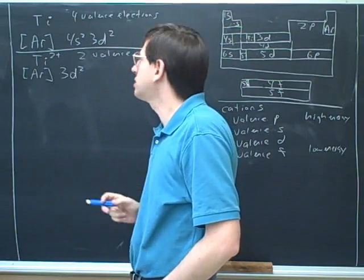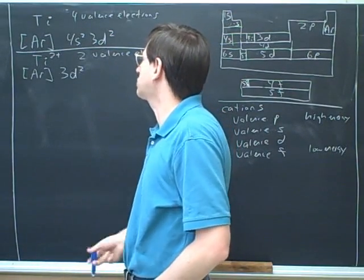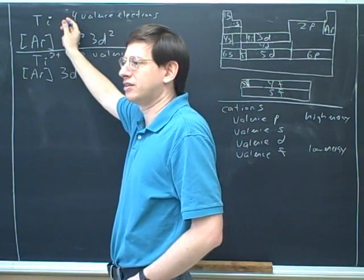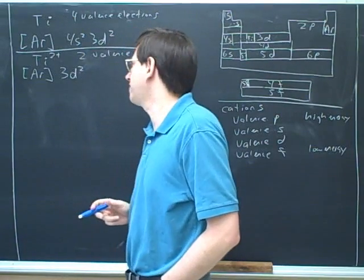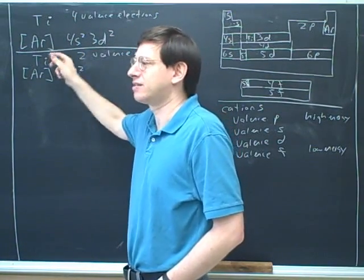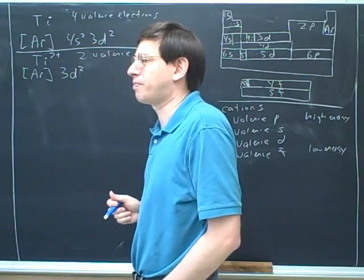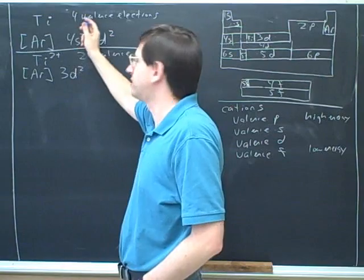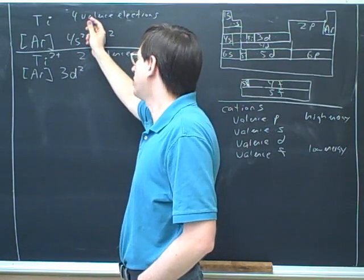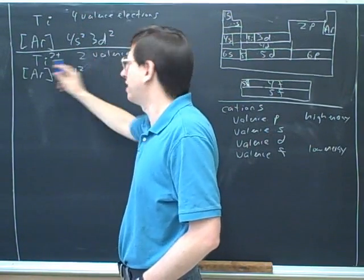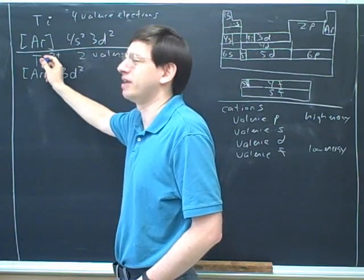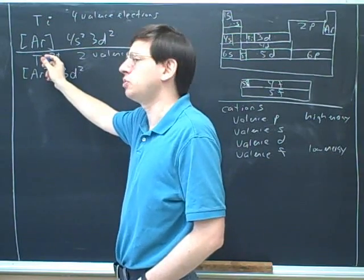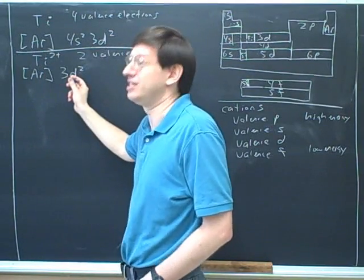So for practical purposes, what we're learning here is that cations put their valence electrons in the D block. So what's the method for dealing with this? The method is, first, determine how many valence electrons the neutral element has. Then determine how many valence electrons the cation has, and then put them in. So those are the three step process. So it's important to be systematic. First, find the number of valence electrons in the neutral element. Then that will allow you to figure out the number of valence electrons in the cation. Because that will tell you how many you're taking away.